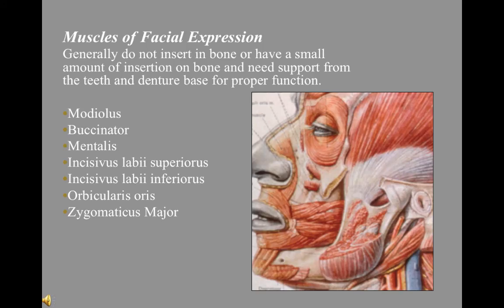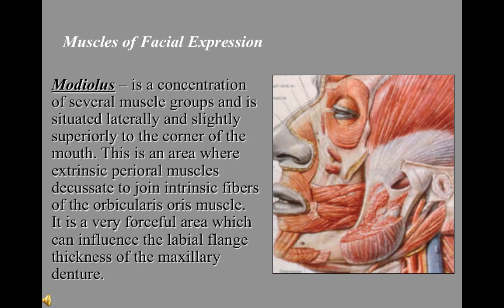Generally, the muscles of facial expression do not insert on bone or have very little insertion on bone. They need support from the teeth and the denture base for proper function. Those muscles are the modiolus, buccinator, mentalis, incisivus labii superioris, incisivus labii inferioris, orbicularis oris, and zygomaticus major. The modiolus is a concentration of several muscle groups situated laterally and slightly superior to the corners of the mouth, where extrinsic perioral muscles decussate to join intrinsic fibers of the orbicularis oris muscle.